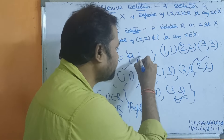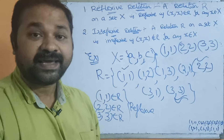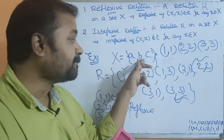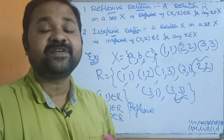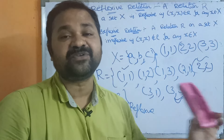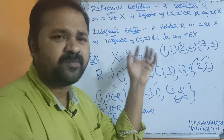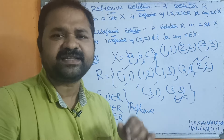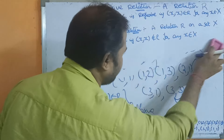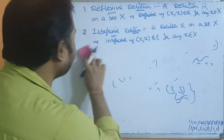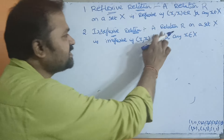In general, if the set elements are a, b, c, then if (a,a), (b,b), and (c,c) are all present in the relation, we say it is a reflexive relation. If even one such pair is missing, it is not reflexive. This is the rule for reflexive relation.